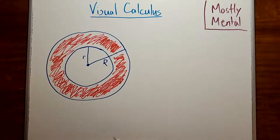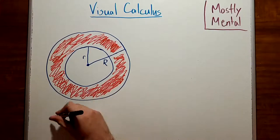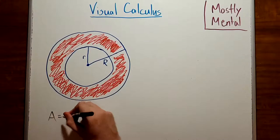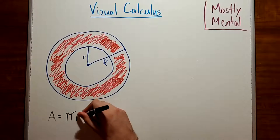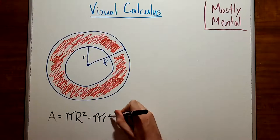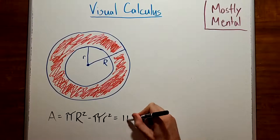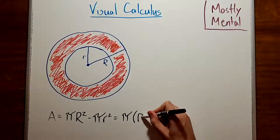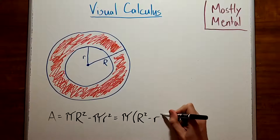Well, it's going to be the difference in areas of the two circles. So the area is π times big R squared minus π times little r squared. Or factoring, that's π times big R squared minus little r squared.